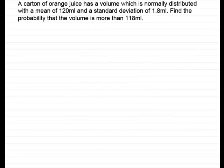Now here's the example which I'll read out to you. A carton of orange juice has a volume which is normally distributed with a mean of 120 milliliters and a standard deviation of 1.8 milliliters. Find the probability that the volume is more than 118 milliliters.